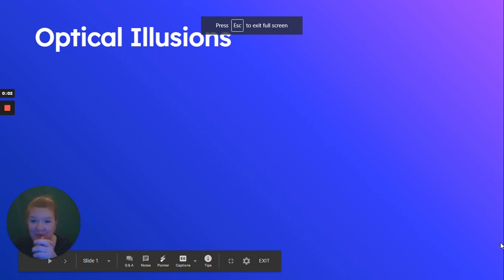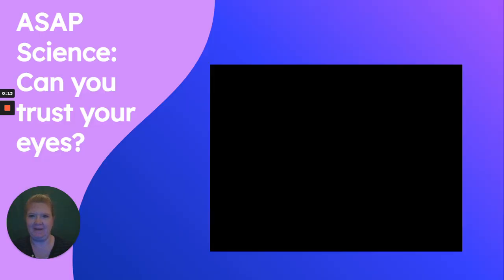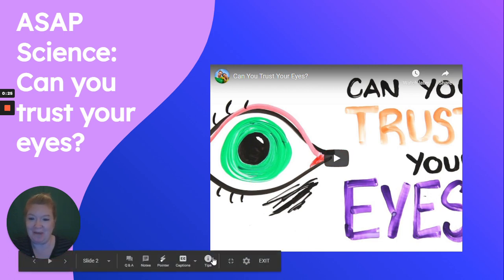Truth be told, this is the census unit — one of my favorite units — and this right here is one of the reasons why. I just love learning about optical illusions. So in class we're going to watch this video, ASAP Science's 'Can You Trust Your Eyes?' If you are watching it here, look it up. It's a great video with an introduction to optical illusions, but we're going to continue on to the next slide.